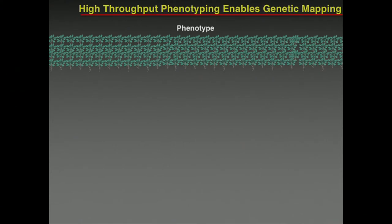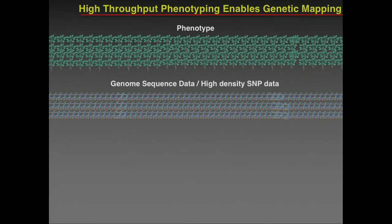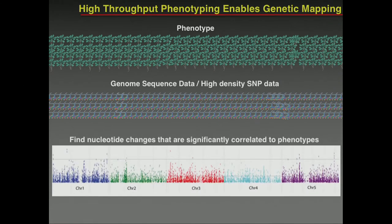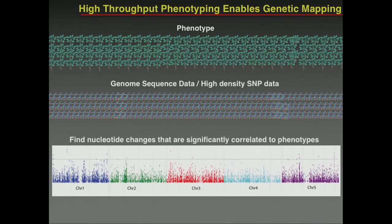The idea is you measure a lot of different phenotypes — in this case, root length of all these different strains. Some have long roots, some have short roots. You quantify this, take the genome sequence data, and try to find regions where strains with long roots share a common nucleotide that is different from strains with short roots. You try to find commonalities between strains displaying the same root length, different from strains showing a different root length — and you can do this all over the genome.